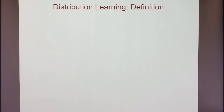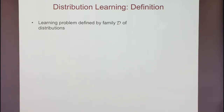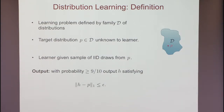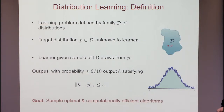Let me formally define the problem. We have some class C of probability distribution functions, which defines the problem. There is some unknown target distribution P in the class. The learning algorithm gets IID samples from P and outputs a hypothesis H that is close to P in total variation distance (L1 distance). The goal is to design algorithms that are sample-optimal — achieving the information-theoretic optimum — and computationally efficient, with running time polynomial or ideally linear in the sample size.